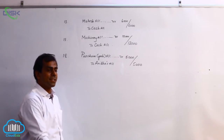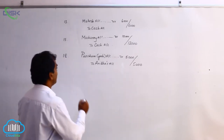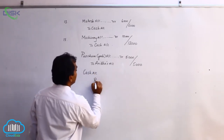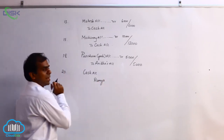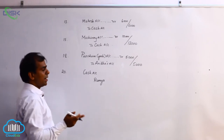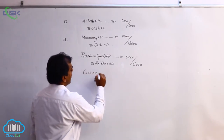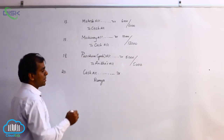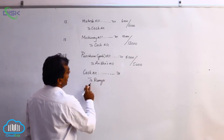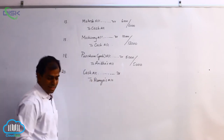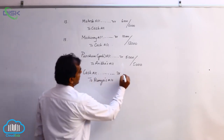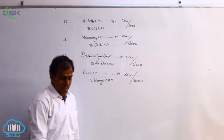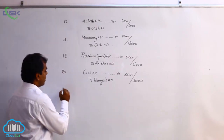The transaction on the 20th is cash received from Mrs. Ramya. Cash and Ramya are the two accounts. Cash is a real account and is coming in, so we debit cash. Ramya is a personal account and is giving cash to the business, so she is the giver — we credit Ramya's account. The journal entry is cash account debit to Ramya's account, the amount being 3000, and the narration is cash received from Ramya.